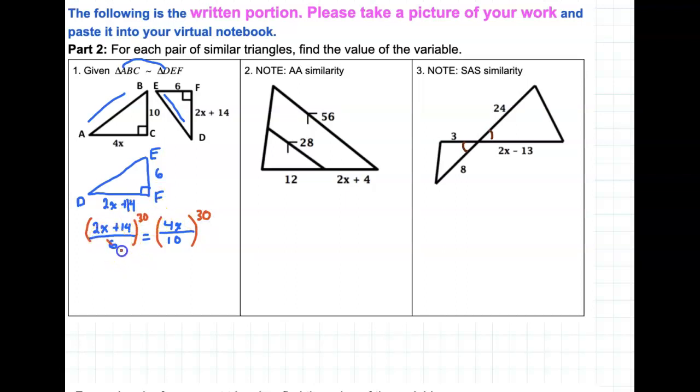So 30 divided by 6 is 5, and 30 divided by 10 is 3. So now I'm just going to have 5 times 2X plus 14 is equal to 3 times 4X. So we have 10X plus, that's going to be 50 and 20, so that's 70.